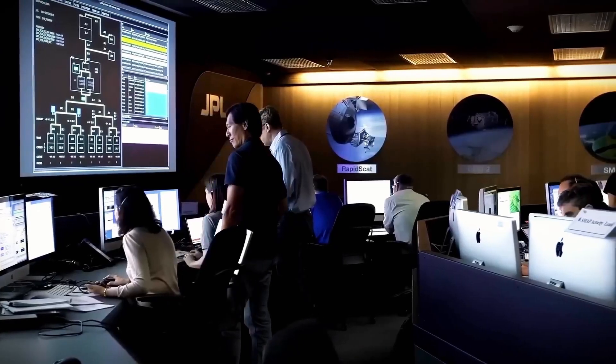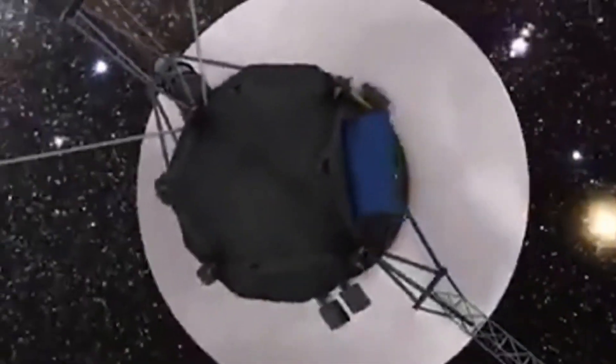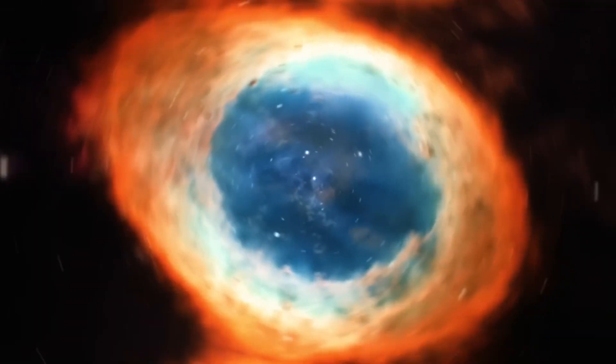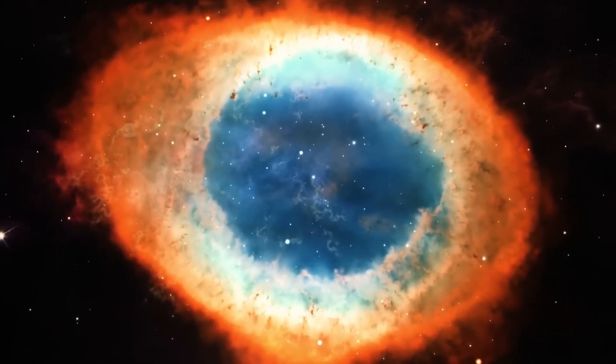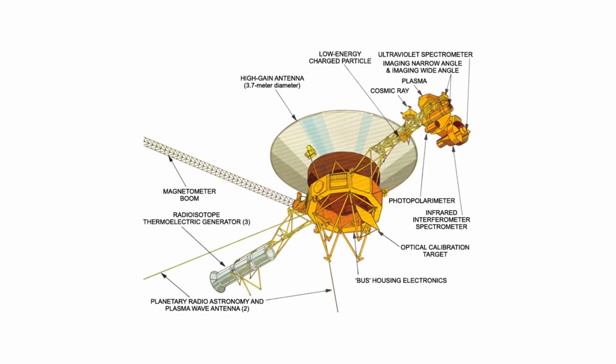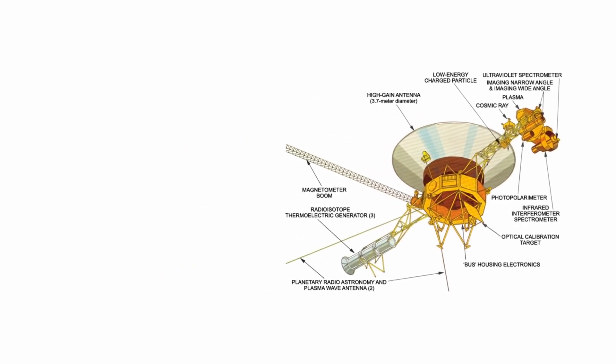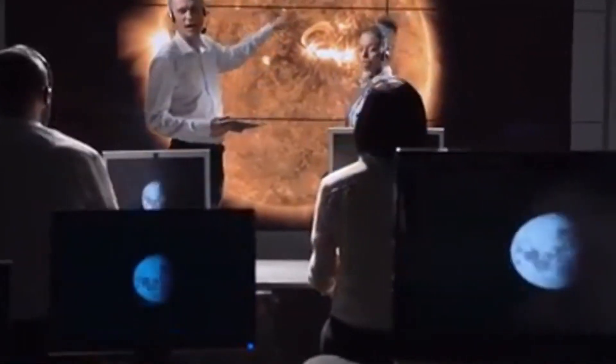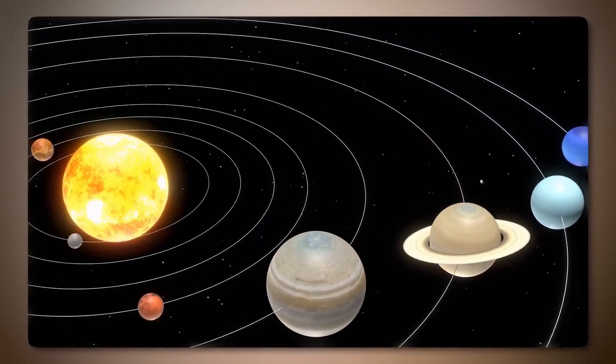As of January 2024, Voyager 1 is approximately 14.9 billion miles, 158 times Earth's distance from the Sun, from our planet, making it the farthest human-made object in space. Voyager 2 achieved a major milestone in November 2018, becoming only the second spacecraft to enter interstellar space, following Voyager 1's breakthrough in August 2012.